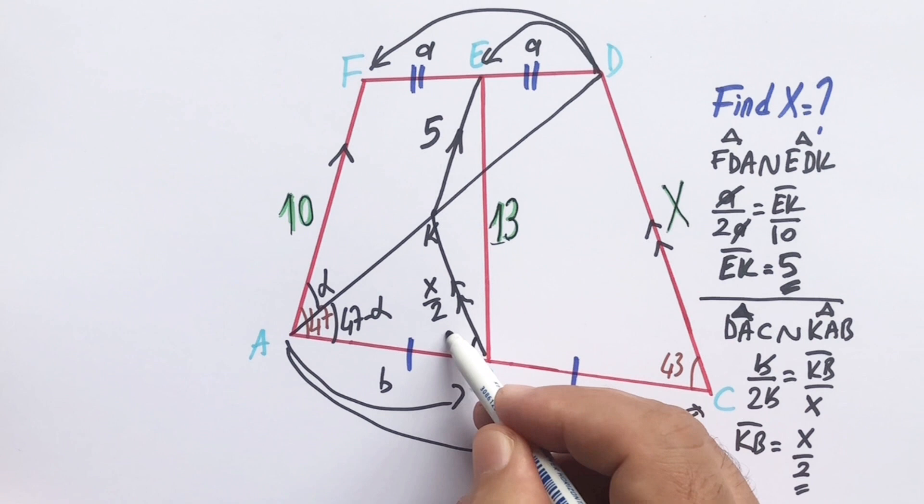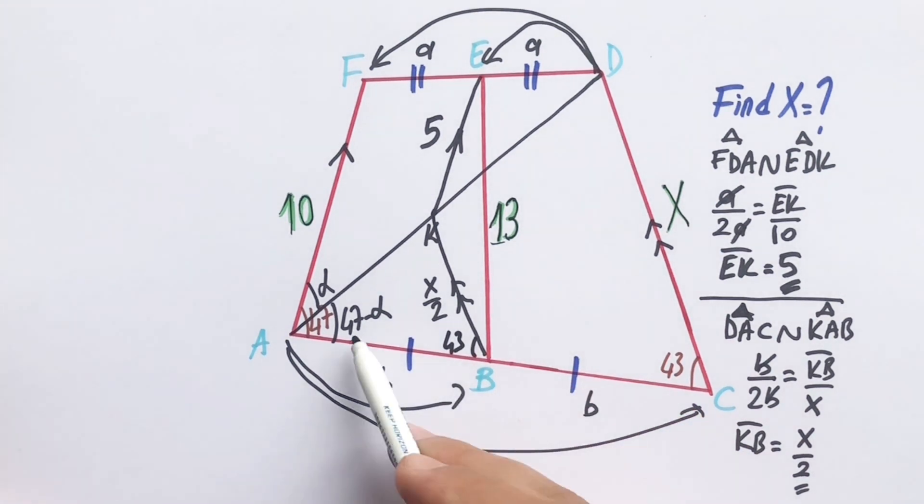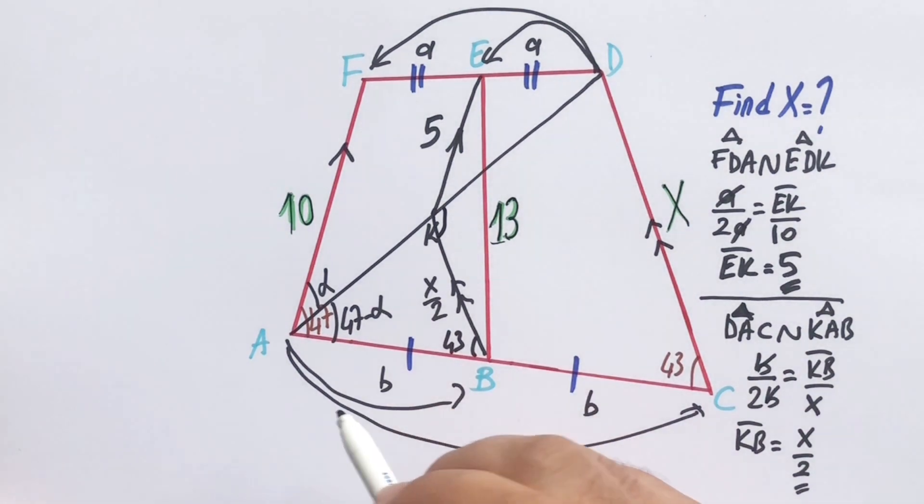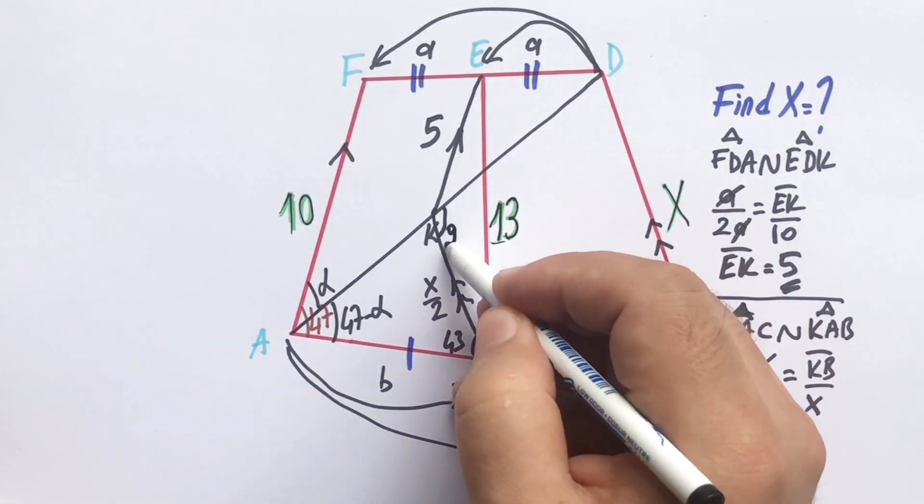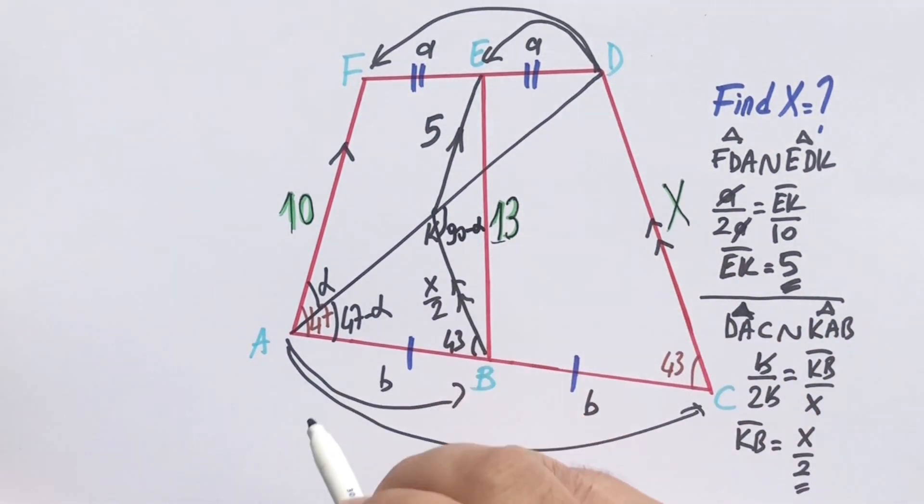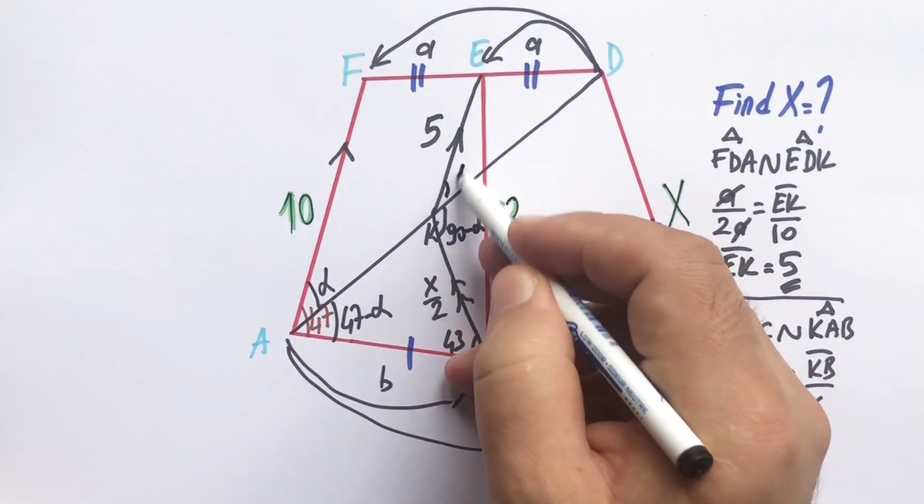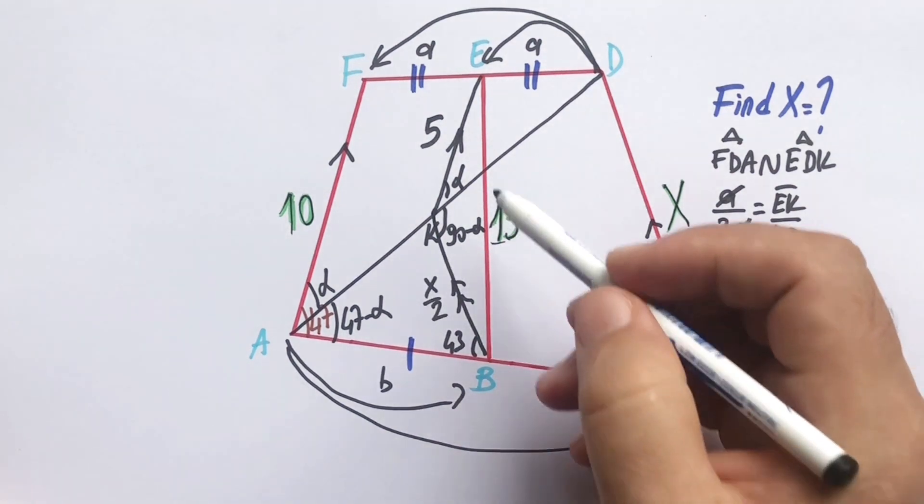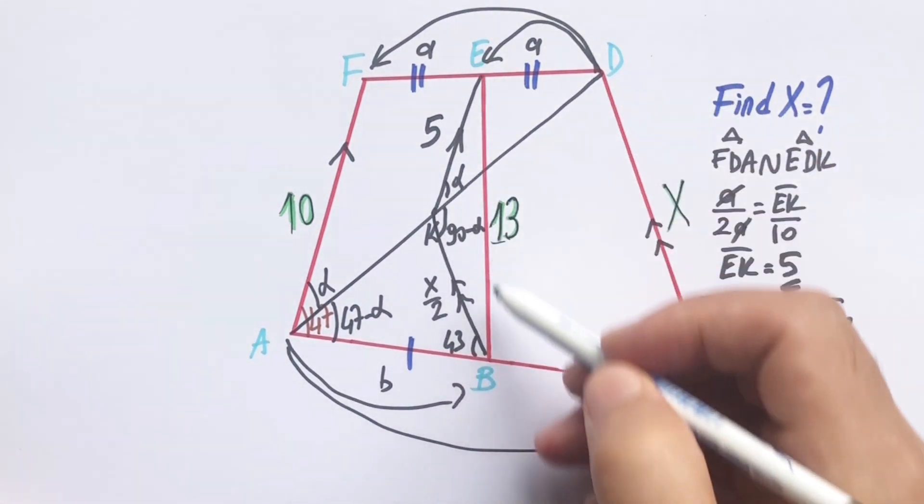If here is 43 degrees, this angle must be 43 degrees. Sum of two interior angles equals one exterior angle. Therefore here is 90 minus alpha. This angle must be alpha because of parallel. If you notice, we get a right triangle.